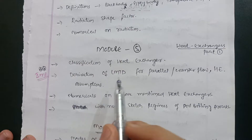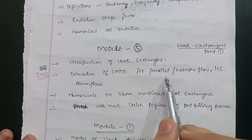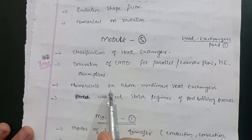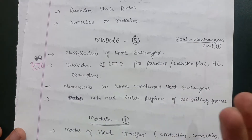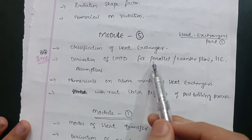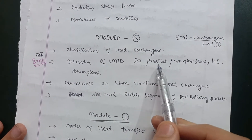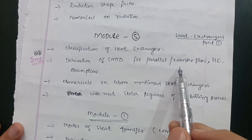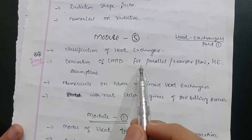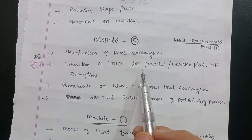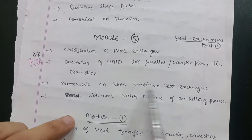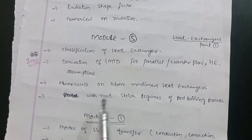Numericals are based on the above-mentioned heat exchangers — either parallel flow or counter flow. On that basis there will be some problems. As you derive the equations, you will automatically get those equations which you can use in the numericals. So prepare both the derivation and the numericals on LMTD for parallel and counter flow heat exchangers.